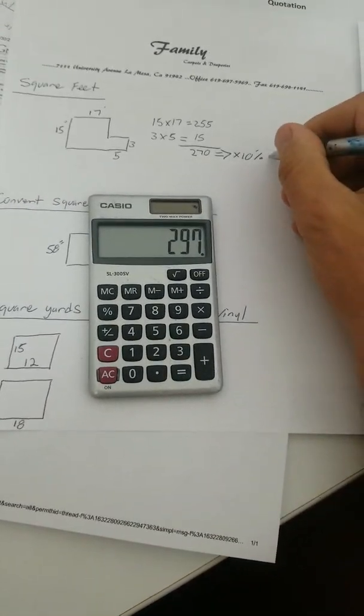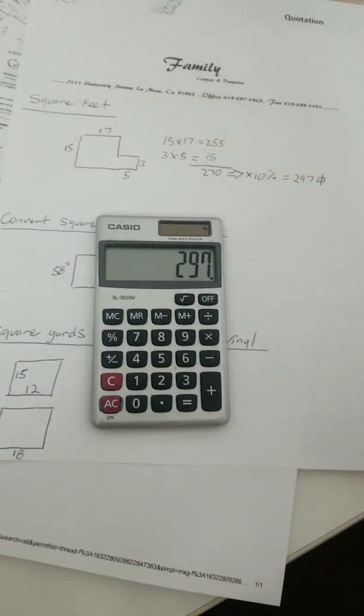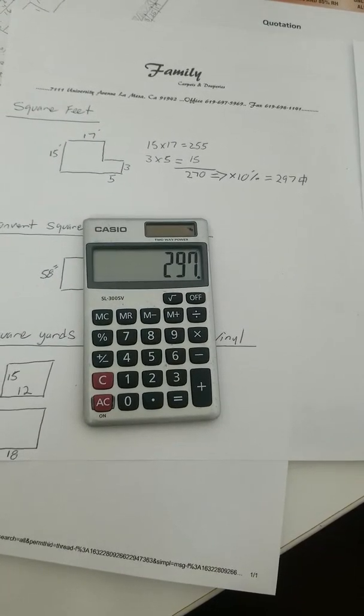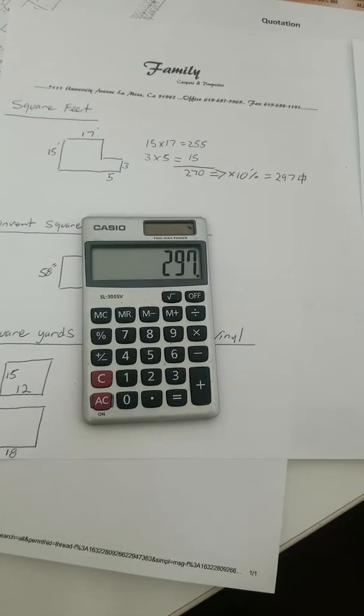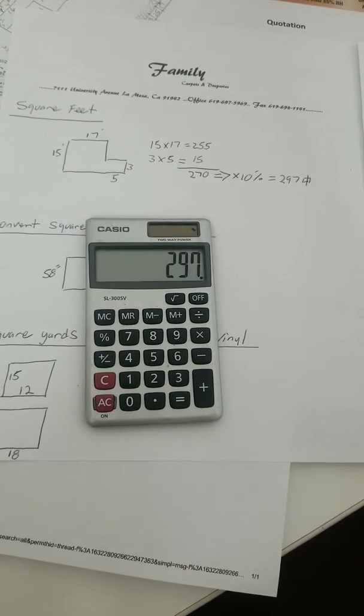That gives us 297 square feet and we round that, see that little sign right there? That's square footage. We're going to round that up to the nearest box and there you have your square feet. Pretty simple, isn't it?